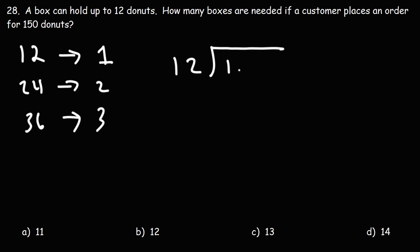Now how many times does 12 go into 15? 12 goes into 15 one time. 12 times 1 is 12, and then if we subtract, 15 minus 12 is 3.